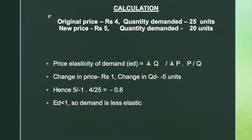This is a negative number as price and quantity demanded have an inverse relationship. It should be noted that EP, or 0.8 in absolute value, is less than 1 and greater than 0, which implies that the demand is less elastic.